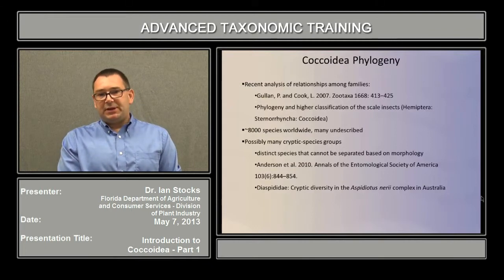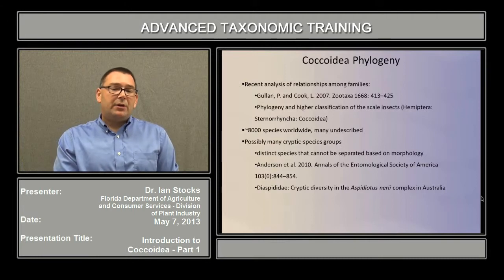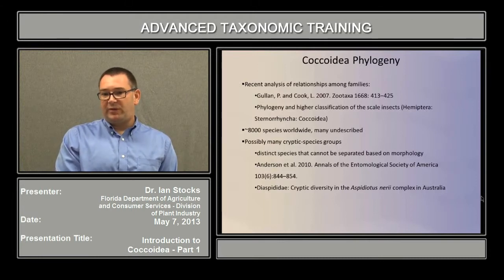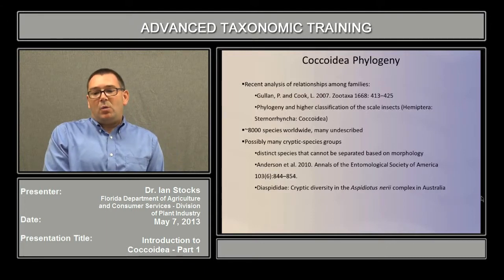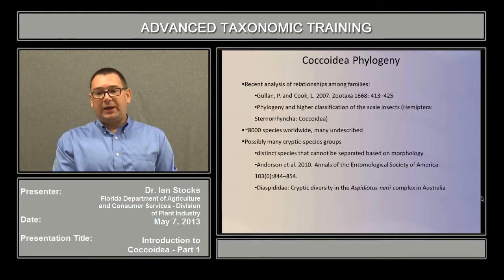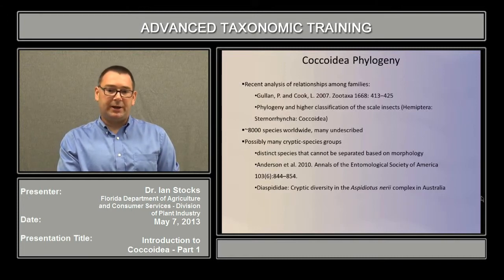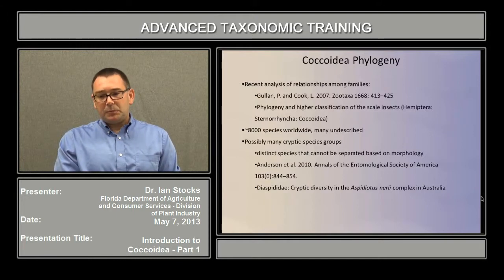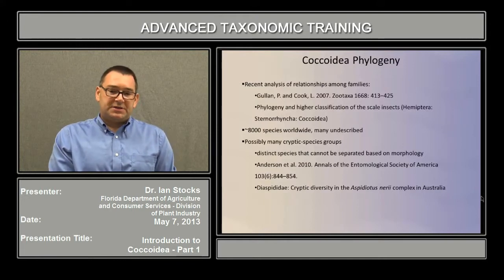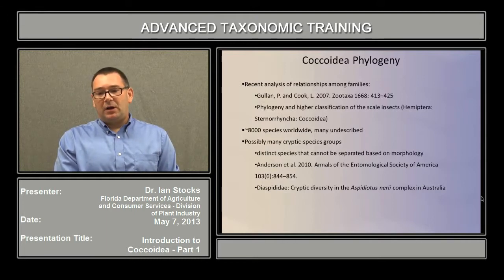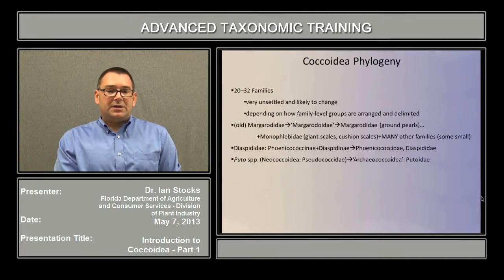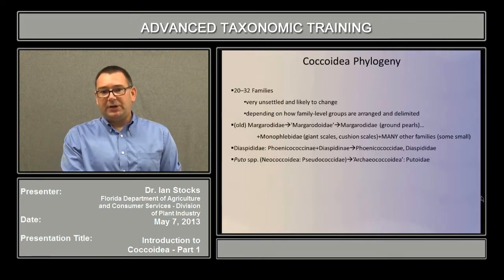Cryptic species groups are clusters of species that are biologically distinct, but that we are not able to separate based on the traditional approaches of morphology. A recent example of this is from Anderson et al. in 2010, where they studied the cryptic diversity in an armored scale complex — a species called Aspidiotus nerii, which forms a complex of species in Australia. They discovered through molecular means that the single name Aspidiotus nerii, based on a morphological understanding, actually corresponds to a number of other species when studied in more detail.